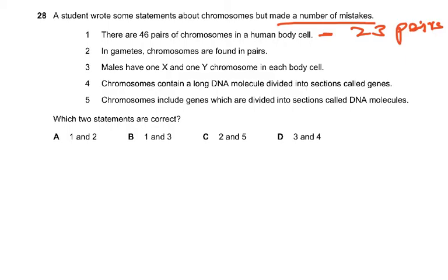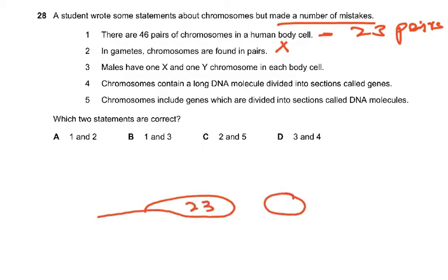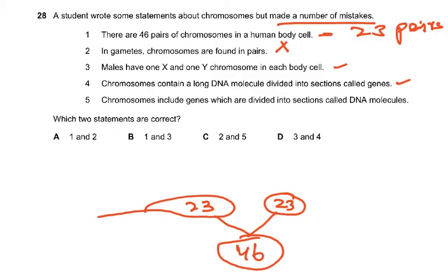Statement two: in gametes, chromosomes are found in pairs — that is wrong, because there is one of each pair. There is a female gamete and a male gamete; both have one of each pair. When they fuse, the zygote is formed and the chromosome number is restored. Statement three: males have one X and one Y chromosome in each body cell — that is correct. Statement four: chromosomes contain a long DNA molecule divided into sections called genes — also correct.